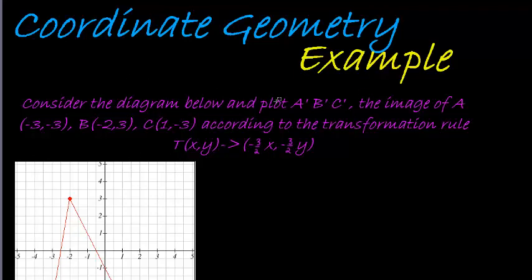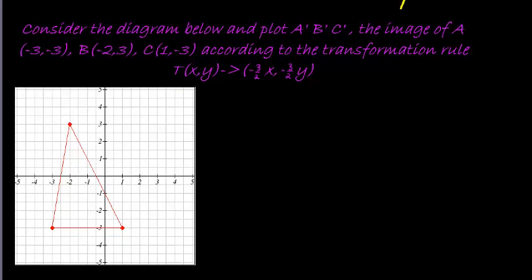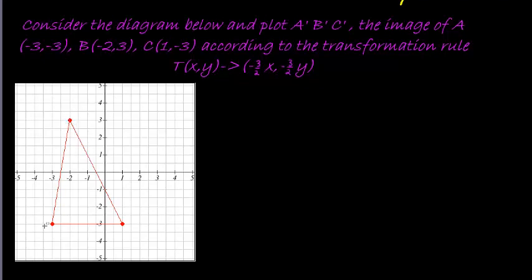Okay, so this is our last example on enlargements and compressions. This one tells us to consider the diagram below and plot A accent, B accent, C accent, the image of A which is negative 3, 3. Let's plot that on here, negative 3, 3 there, that's A.